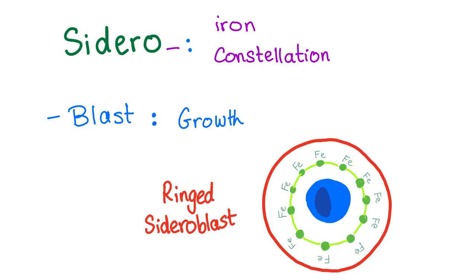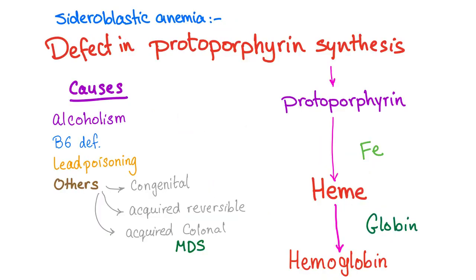The word sideroblastic anemia means iron or constellation, depending on Greek or Latin. 'Blast' means growth. Although not scientifically accurate, there is a growth of iron constellation — iron around the nucleus of the RBCs. You may know that RBCs are non-nucleated, but this is a disease — it's an exception. These sideroblasts are immature, so it makes sense that they are nucleated.